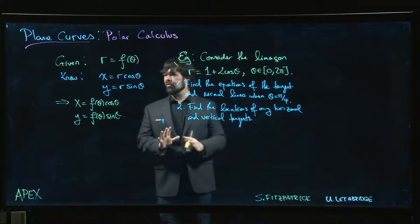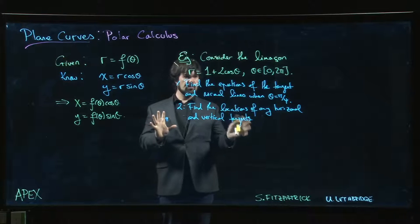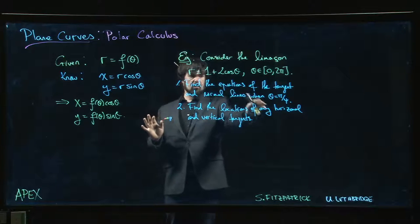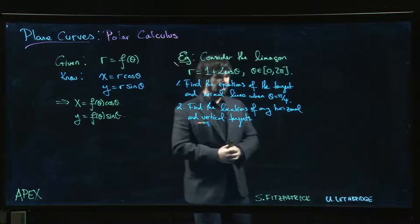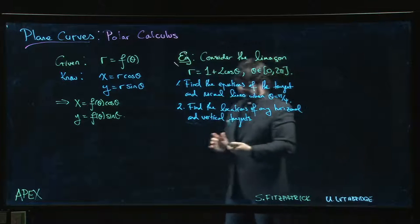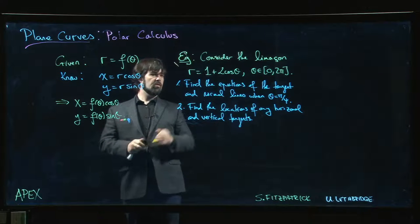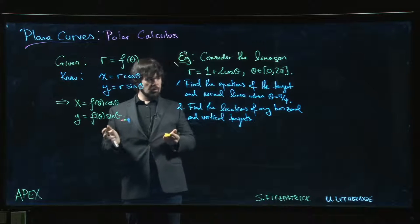All right, so here's our first example we're going to put to use this idea of finding equations for tangent and normal lines. We're going to do tangent and normal lines at a particular point, then we're going to look for horizontal and vertical tangents. So our curve is the Limaçon, so r is equal to 1 plus 2 cos theta.